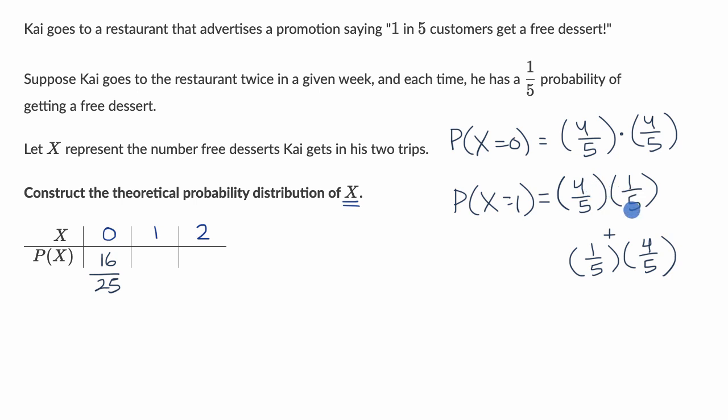And so if we add these together, let's see the four-fifths times one-fifth, this is going to be 4/25. And then this is going to be 4/25 again. And you add these two together, you're going to get 8/25.